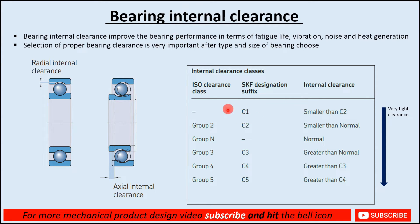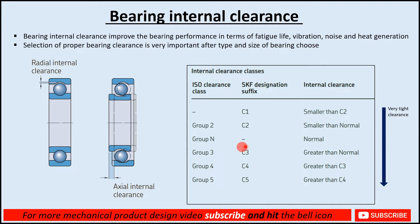As you can see in the table, there are different clearance classes used for bearings: C1, C2, CN, C3, C4, and C5. CN refers to the normal clearance. C2 is smaller than normal clearance, and C1 is smaller than C2. Going the other way, C3 is greater than normal clearance, C4 is greater than C3, and C5 is greater than C4.